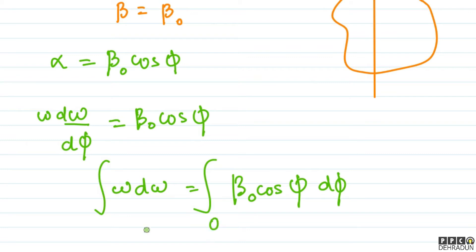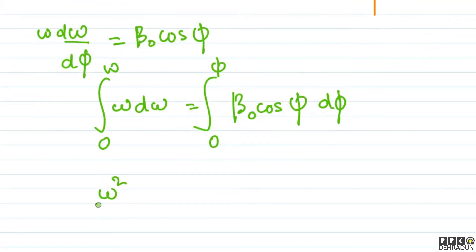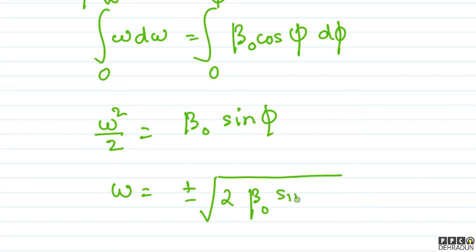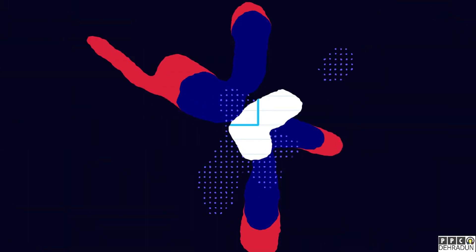When phi equals zero, omega was also zero. Let us say when the rotation angle is phi, the angular velocity is omega. Integrating both sides: omega-squared upon 2 equals beta-naught times sin phi — since the integral of cos phi is sin phi. Therefore omega equals plus or minus the square root of 2 beta-naught sin phi.